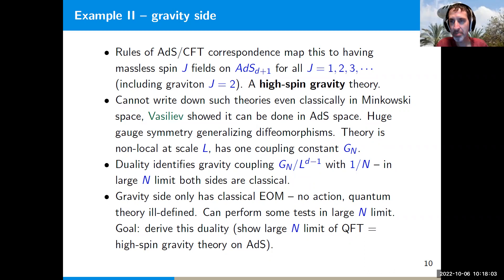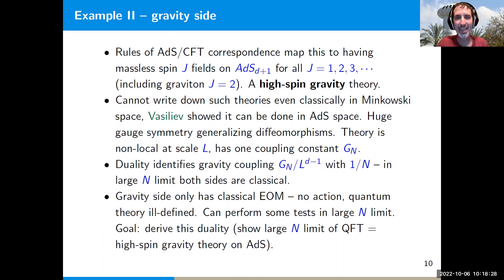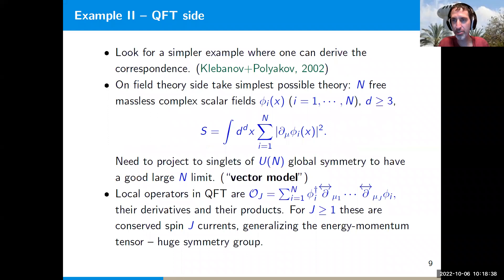Regarding a Hawking-Page transition: even putting this theory at finite temperature is subtle. You can take the high-spin gravity theory classically and put it on thermal AdS, but since we don't know a black hole background it's not obvious if there is another background. From the field theory side, to ask whether it has a Hawking-Page transition you need to give more details on precisely how you project onto singlets of U(N). In flat space you can just impose that projection, but on a circle the only consistent way is to include a U(N) gauge holonomy and integrate over all possible holonomies.